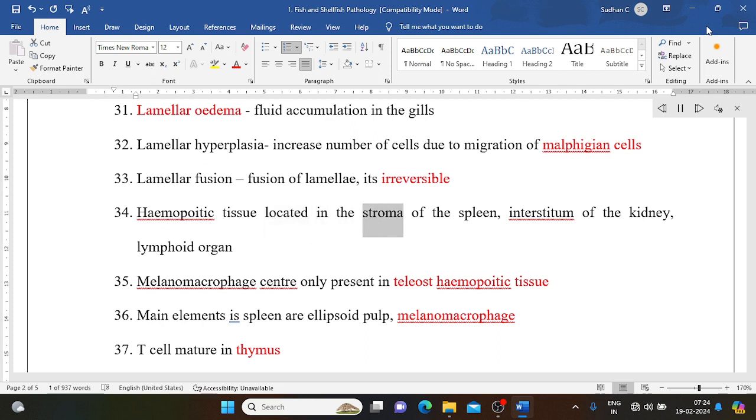Hemopoietic tissue located in the stroma of the spleen, interstitium of the kidney, and lymphoid organ. Melanomacrophage centers only present in teleost. Hemopoietic tissue main elements in spleen are ellipsoid pulp and melanomacrophage. T-cell mature in thymus.